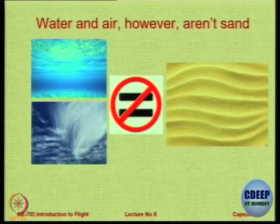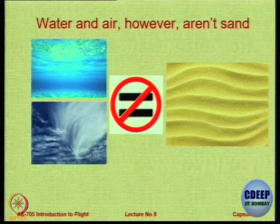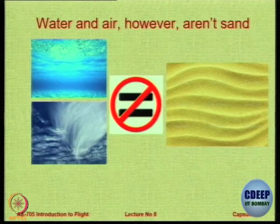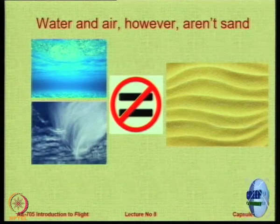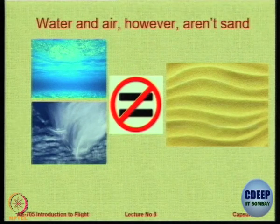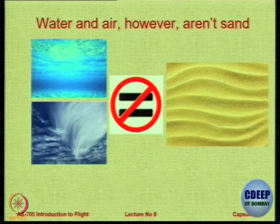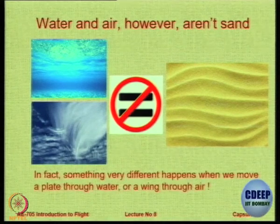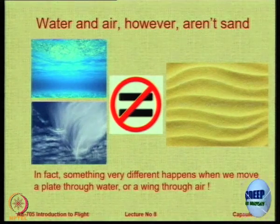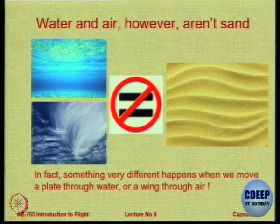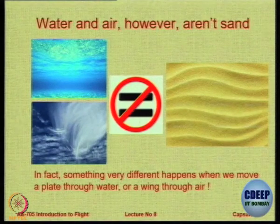But the same does not happen when you move a plank through fluid. Air and water are not sand — they are different. Sand is not fluid. Sand consists of distinct particles, while fluid consists of much more. In certain situations flow of sand can be similar to flow of a fluid, but in general you cannot equate water and air with sand. When you move a plate through water or a wing through air, what happens is not what we saw for the motion of the plank in sand. Is there any difference in the flow? In case of sand the sand is simply pushed aside; in case of water or air, something more happens.